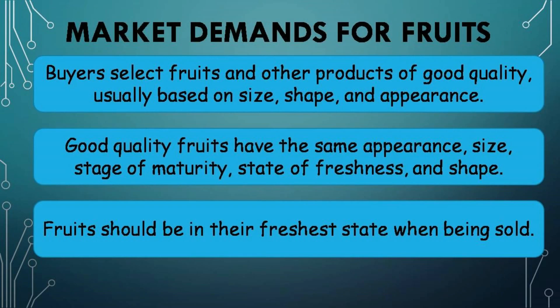Market Demands for Fruits. Buyers select fruits and other products of good quality, usually based on size, shape, and appearance. Good quality fruits have the same appearance, size, stage of maturity, state of freshness, and shape. Fruits should be in their freshest state when being sold.